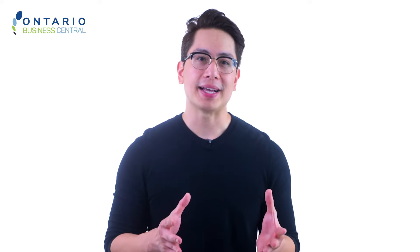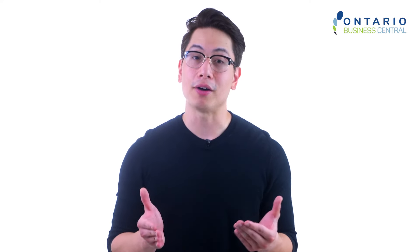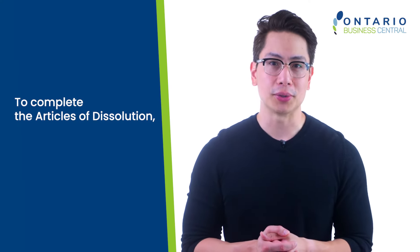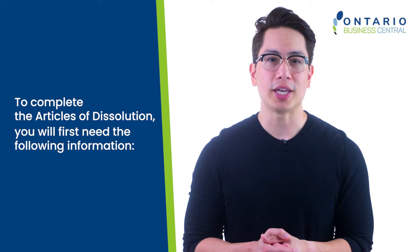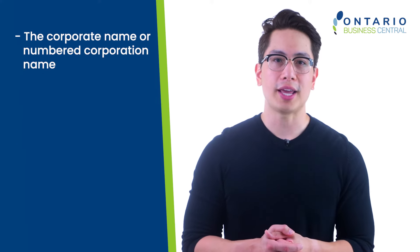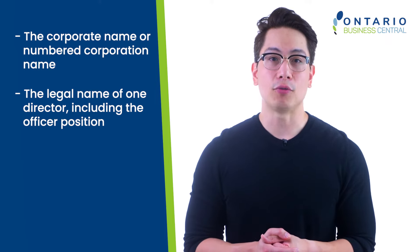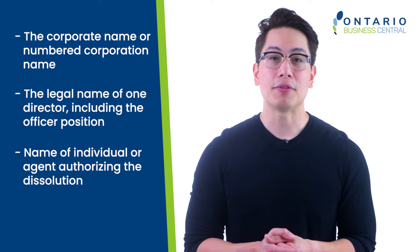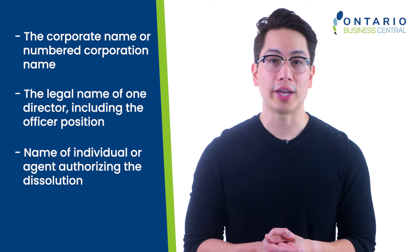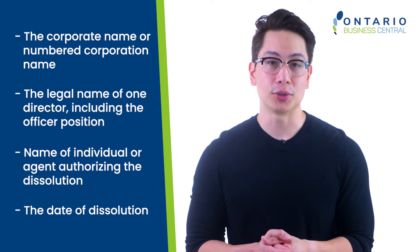The Ontario government has made it easier to dissolve your corporation in the province of Ontario. To complete the articles of dissolution, you will first need the following information: the corporate name or numbered corporation name, the legal name of one director including the officer position, the name of the individual or agent authorizing the dissolution, and the date of dissolution.